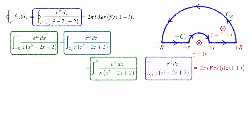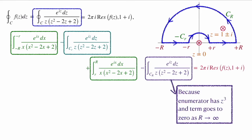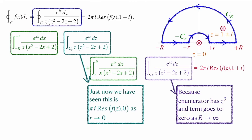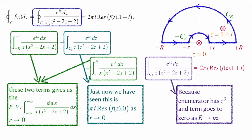The whole integral equals 2πi times the residue inside the contour at z = 1 + i. It is easy to show that the integral along C_R goes to 0, since the numerator has e^(iz) and the denominator grows as z³, making the integral vanish as R → ∞. From the earlier theorem, the term along c_r gives −π·i times the residue of f(z) at z = 0 as r → 0. The two remaining real-axis terms combine to give the Cauchy principal value of the integral of e^(ix)/[x(x² − 2x + 2)] dx, which is the integral we are interested in.